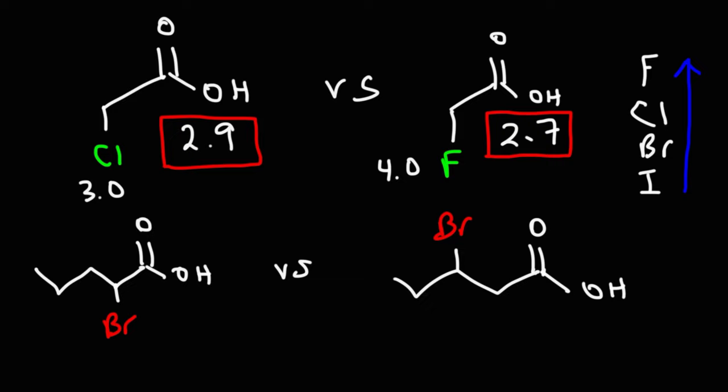What about looking at 2-bromopentanoic acid with 3-bromopentanoic acid? Which one is going to be more acidic? We can clearly tell that the one that's closer to the acidic proton is going to create a more acidic molecule. That's 2-bromopentanoic acid. The inductive effect is not as great when the electron-withdrawing group is far from the functional group that we're considering. If it's three carbons apart, the effect is not really noticeable.